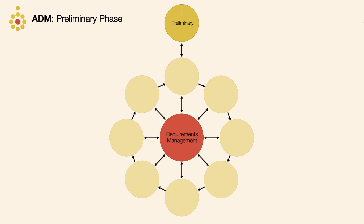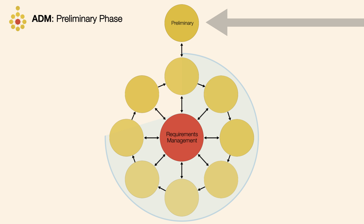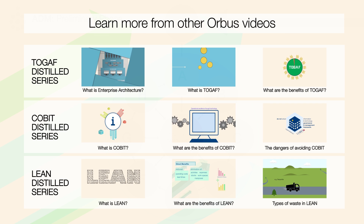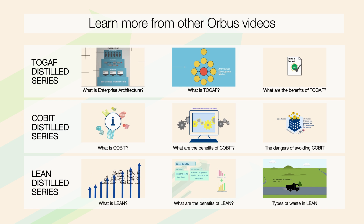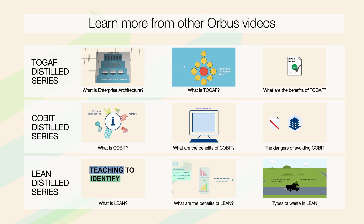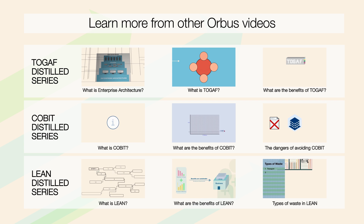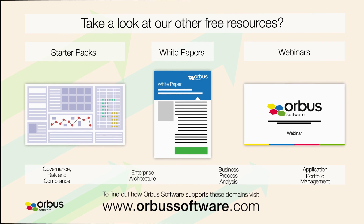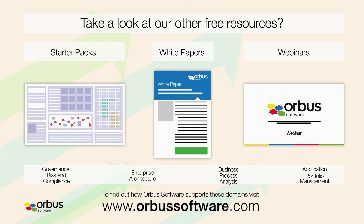At the end of this phase, the EA team should be ready to follow an iteration of the ADM cycle. This is partly why the preliminary phase is shown at the top of the ADM diagram and outside of the main cycle of phases A to H.